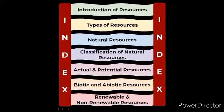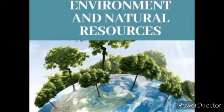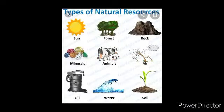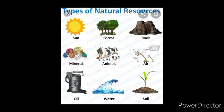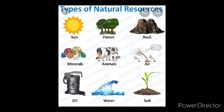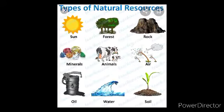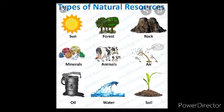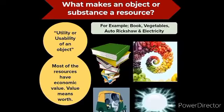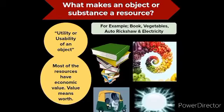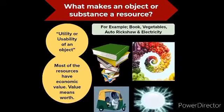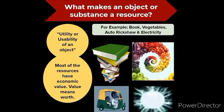Our environment consists of all the living and non-living things. It supplies air, water, food, metals, energy resources, and so many things. All these are examples of natural resources. Anything that we can use to meet and satisfy our needs is a resource.